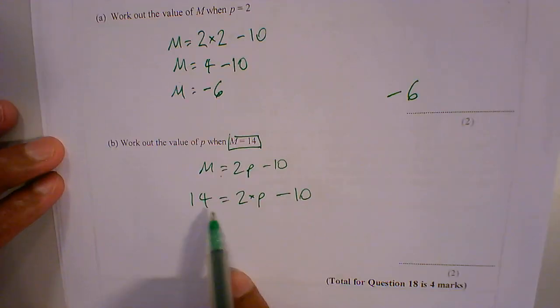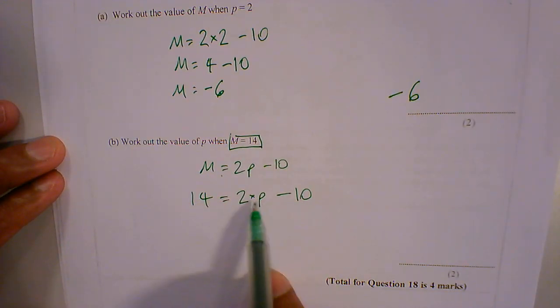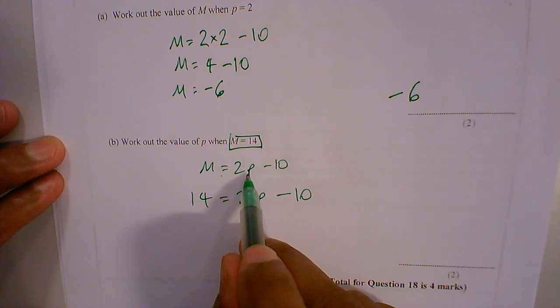So what we do here is, because we're trying to find out what p is, we're going to be doing BIDMAS but in reverse. So if we start with p, what are we doing to p?